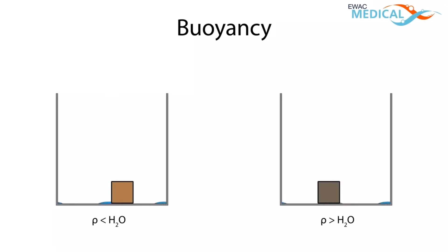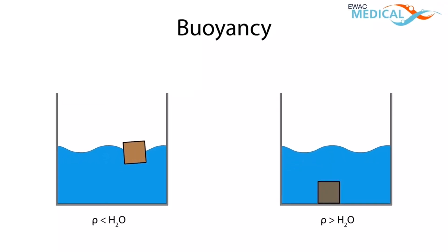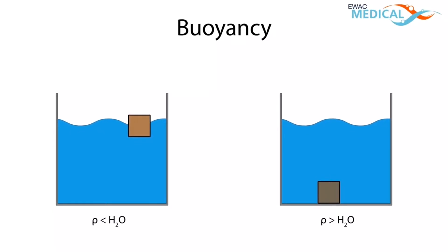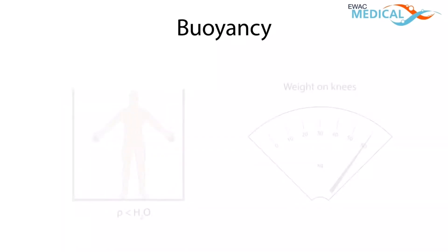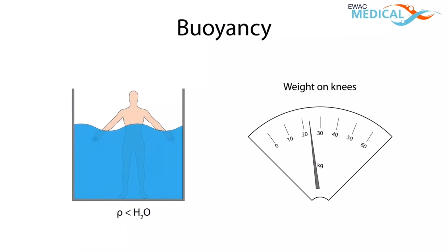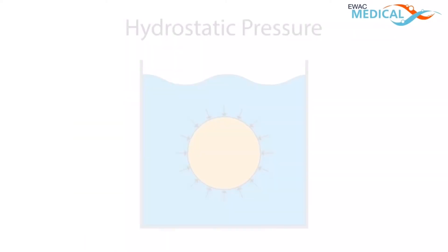Buoyancy. If the density of an object is lower than the density of water, it will float. If it is higher, it will sink. The human body tends to float. When a person is submerged in water, the amount of weight that is carried by the legs and the spine is reduced tremendously.